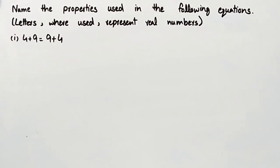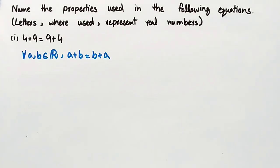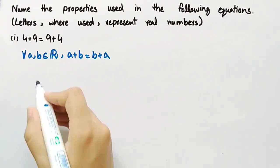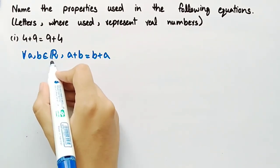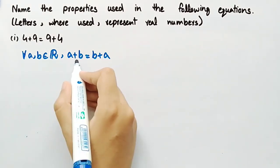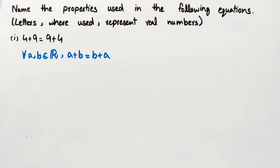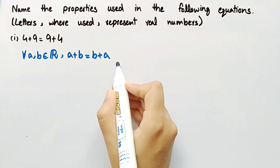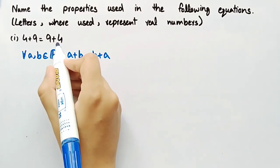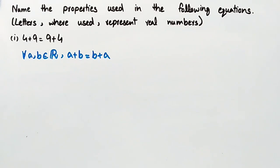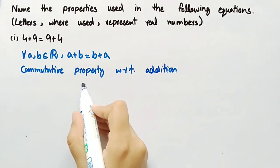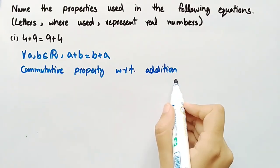The first equation is 4 plus 9 is equal to 9 plus 4. According to the commutative law for addition, for all A, B belonging to the set of real numbers, A plus B is equal to B plus A. By this law, the property used in this equation is the commutative property with respect to addition.